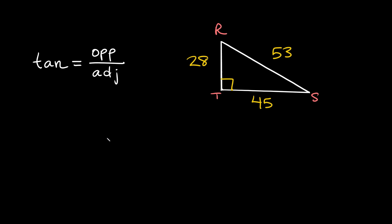What's up you freaking geniuses? In this video I'm going to teach you about the tangent ratio, or the tangent trig function, and also how to use the tangent ratio in order to solve for missing sides in a right triangle. So maybe you've heard of the acronym SOHCAHTOA — this is the TOA part. The tangent of an angle is equal to the opposite side over the adjacent side. So let's find some tangent ratios.